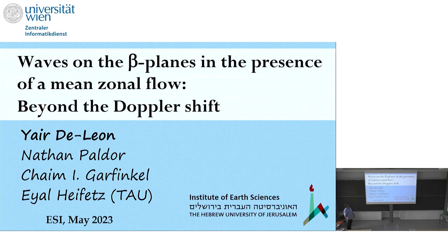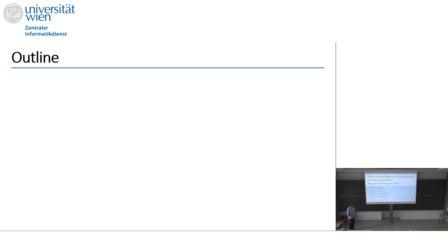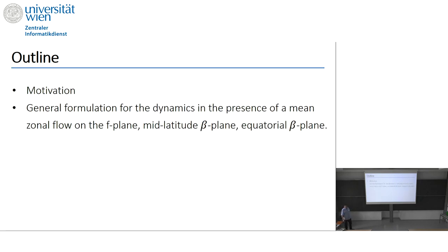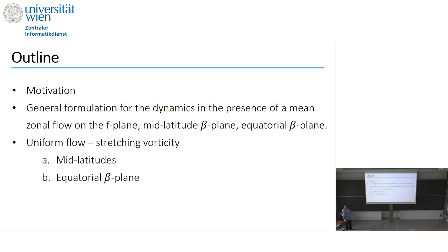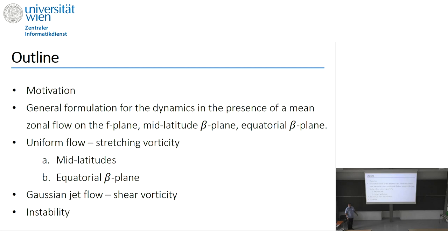We'll deal with waves on the beta planes, in plural, which means mid-latitude beta plane and equatorial beta planes, in the presence of mean zonal flow, which not only Doppler shifts the speed but more than that. I'll start with a short motivation, then formulation of the equations, results for two cases — a uniform mean flow and a Gaussian mean flow — and some words about instability.